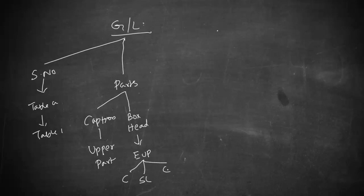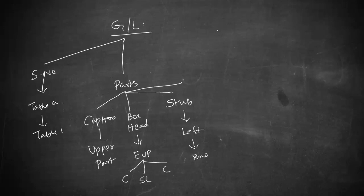So the table should contain: number one, caption; number two, box head; number three, stub. Stub is what we see on the left side of the table, which is going to define each and every row. The fourth and very important part is the body of the table — the main part that contains the substance for which the table is created.